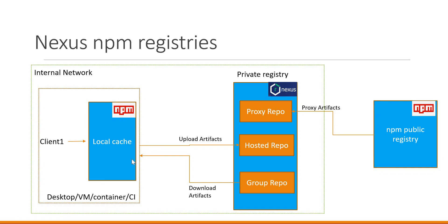Here in the diagram, we have a client machine where we execute the NPM commands. When we execute an NPM command in the client machine — for example, the NPM install command — it will install a package in the client machine. If the dependencies of the package are present in the local cache, then it will use the package from the local cache. If the packages are not present in the local cache, they will be downloaded from the NPM public registry.